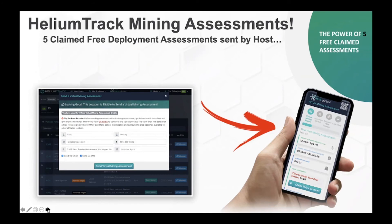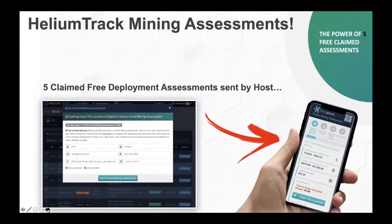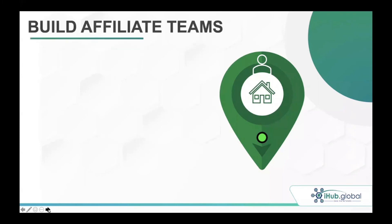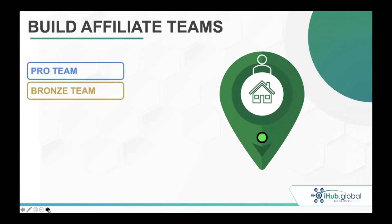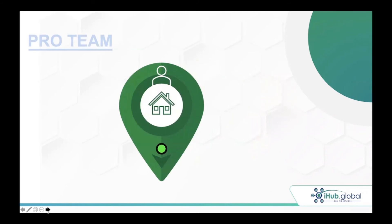Five claimed free deployment assessments means five people said yes, they want to claim this hotspot and real estate. The host goes from 15% to 25% — a 10% increase in pay after 90 days. The referrer goes from 10% to 20% — also a 10% increase. That's the dynamics of the compensation plan: the power of five claimed free assessments. Anybody can do this. After that, you're going to build teams: your Pro team, your Bronze team, your Silver team, and then your Gold team — simply by referring other people and sharing mining assessments.